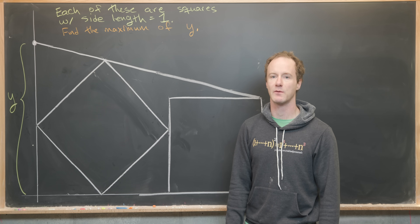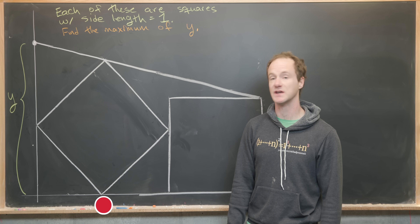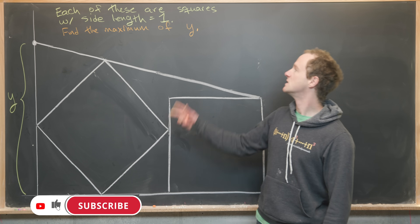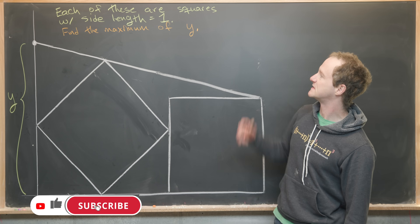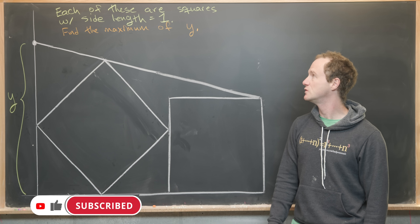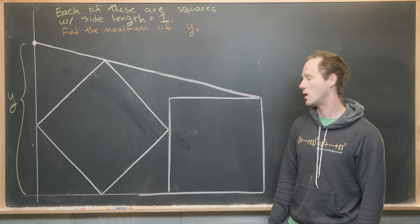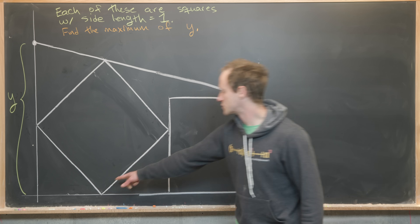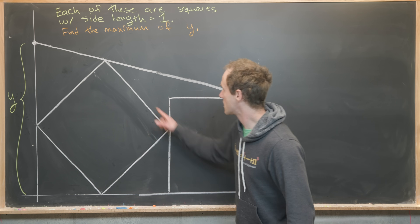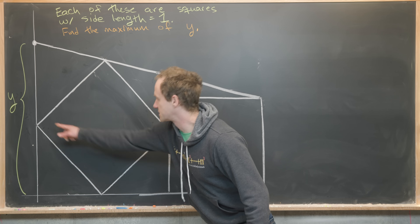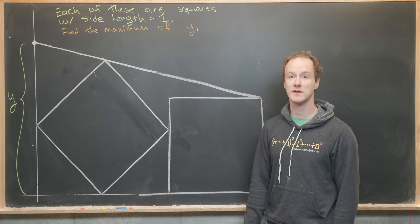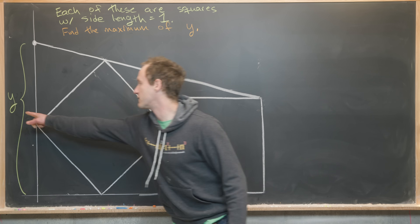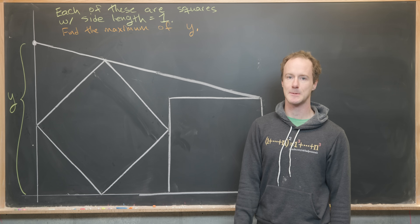Here we've got a nice geometry problem that we're going to solve using first semester differential calculus. Our setup is that we've got two squares with side length one — one over here, and one that's been tilted a little bit. Our goal is to find the maximum value of this quantity y.